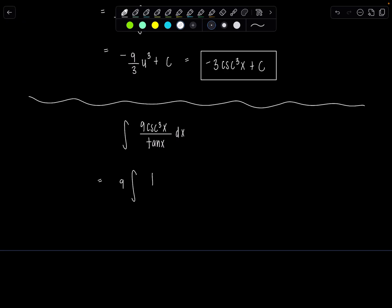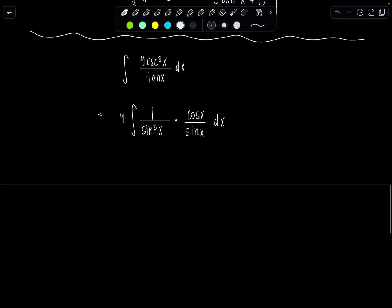So cosecant cubed x would be one over sine cubed x. And then if I have tan x in the denominator, that's the same as having cosine x over sine x being multiplied throughout. So then from here, I can clean up and then I have integral nine outside cosine x over sine to the fourth x dx.